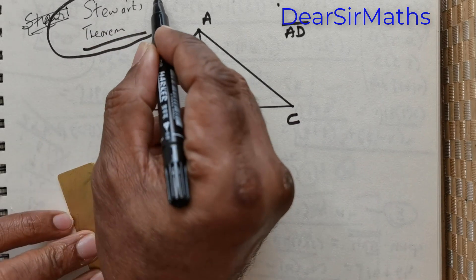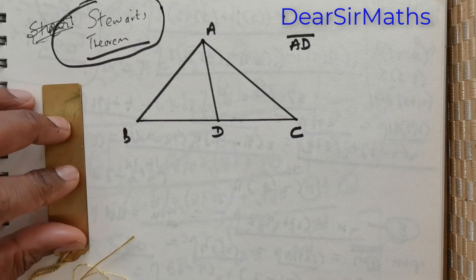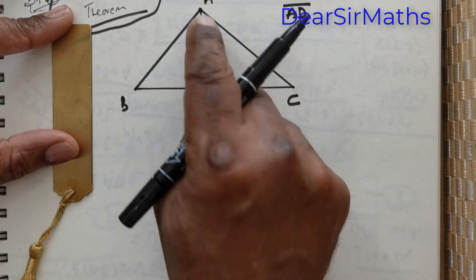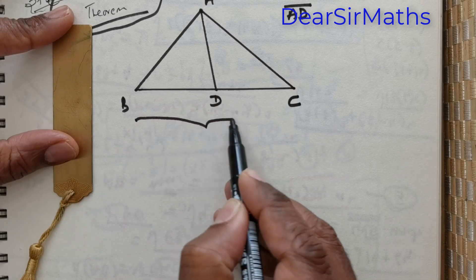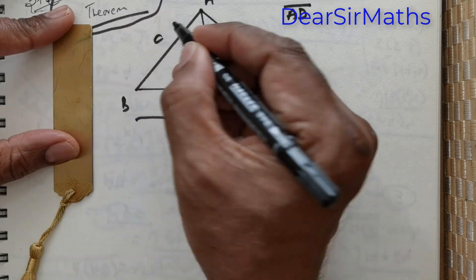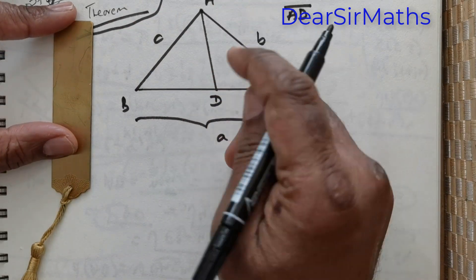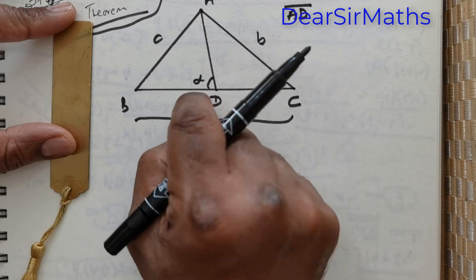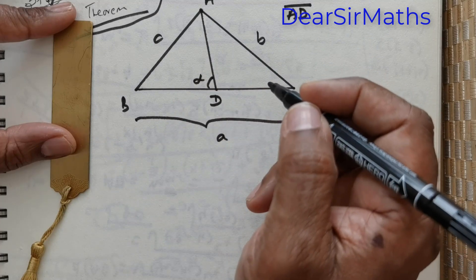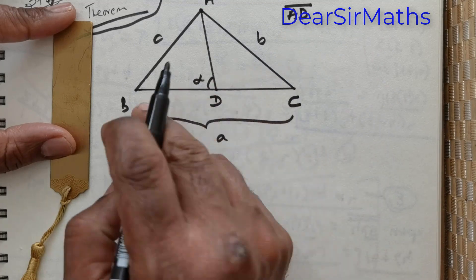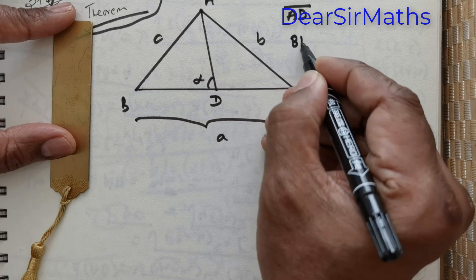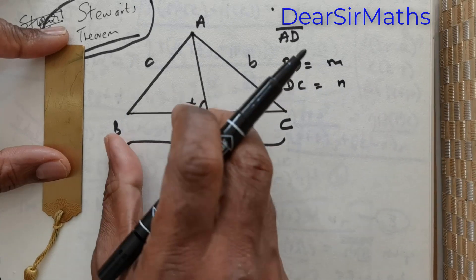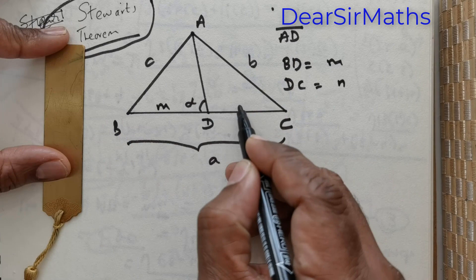Having mentioned that, let me explain how Stewart's theorem is derived. We have a triangle. I am going to take this entire side to be A units, this side B units, and this side C units. Now let the line segment make an angle of alpha. Let the distance BD be equal to M and DC be equal to N.